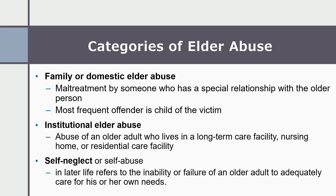Let's talk about the categories of elder abuse. Family or domestic elder abuse — which I'm including intimate partner violence under — is the most frequent type of elder abuse. It is maltreatment by someone who has a special relationship with the older person. The most frequent offenders are children of the victim. You'll see financial abuse is very common in family or domestic elder abuse, involving children, siblings, close friends, and similar relationships.